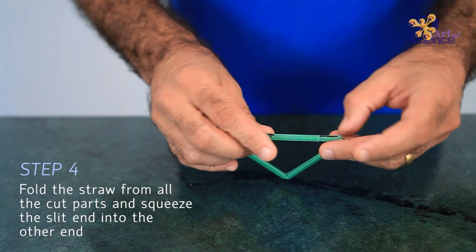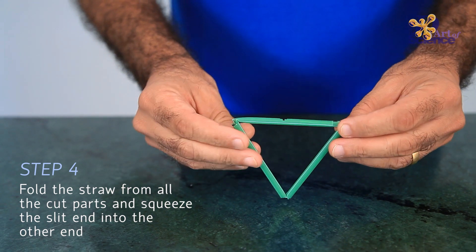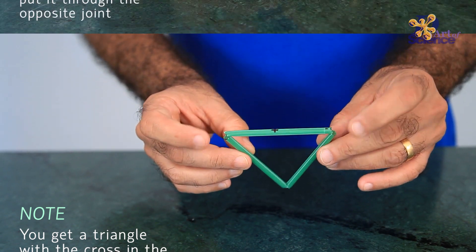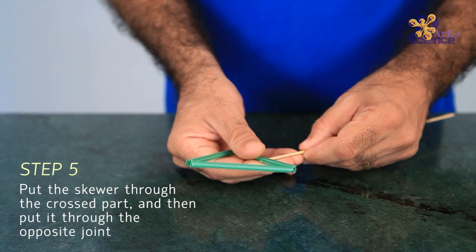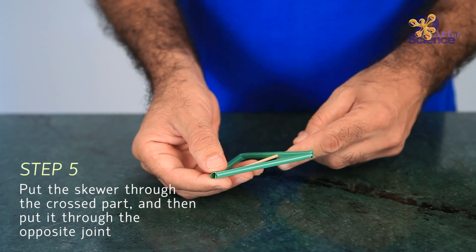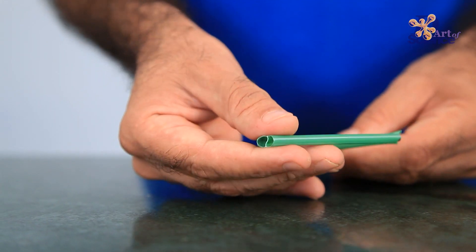The straw pump also follows the same principle. The water enters the straw from the bottom of the triangle. Since the triangle is rotating around its own axis, whatever water enters it tends to be thrown out.